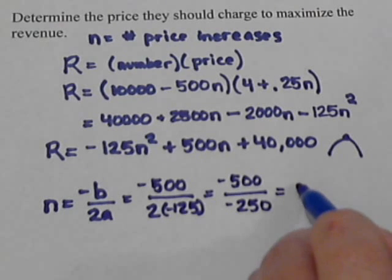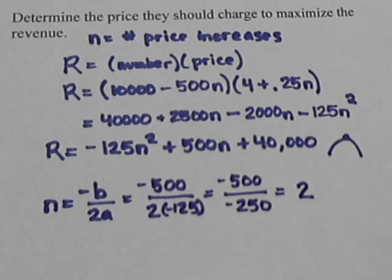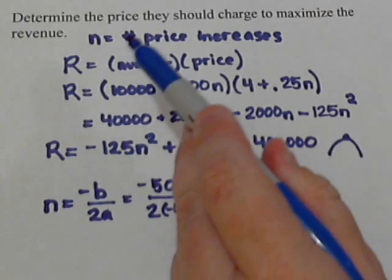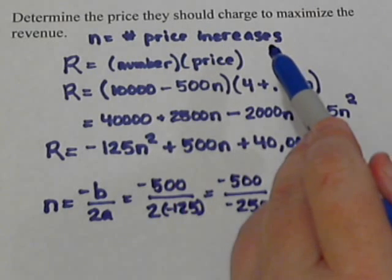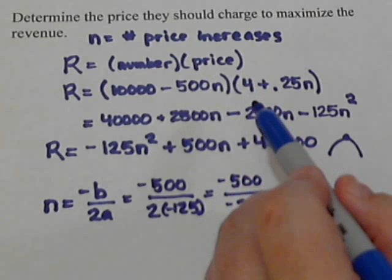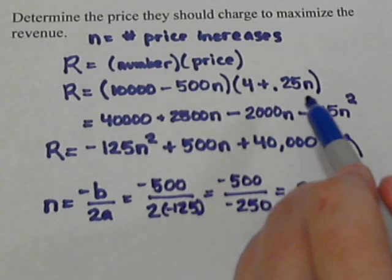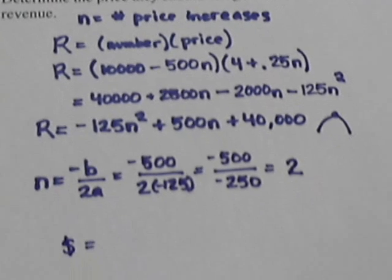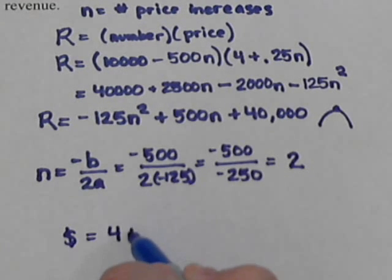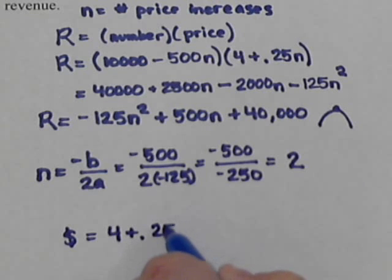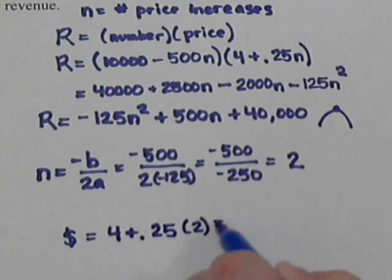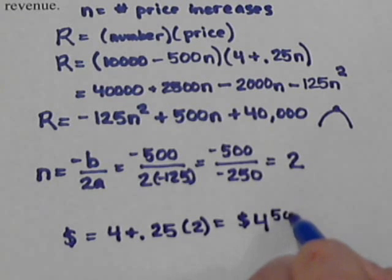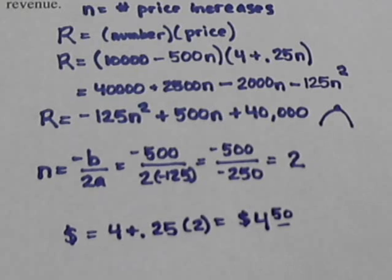This time we get a very nice answer of just 2. Now let's be careful — this does not mean we're going to charge $2. This means we're going to increase the price two times. Remember, our price formula was 4 plus 0.25N, so to get the price, we do 4 plus 0.25 times 2, which means we make the most money when we charge $4.50 for our hot dogs.